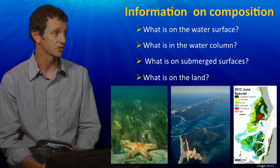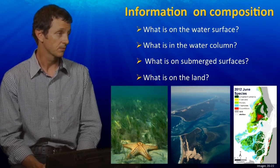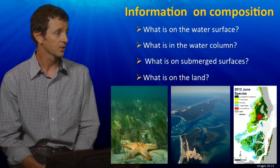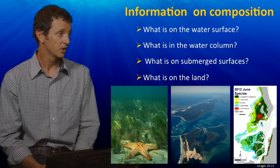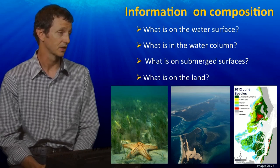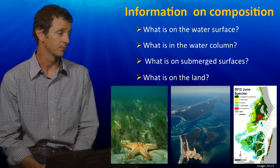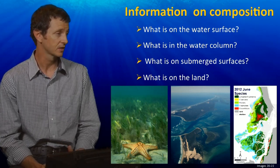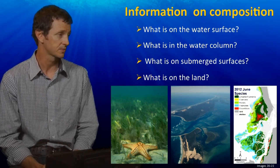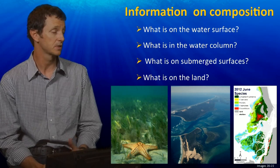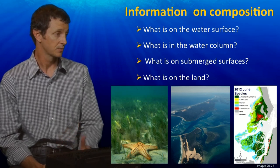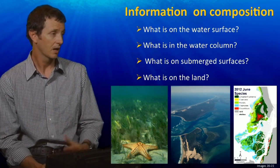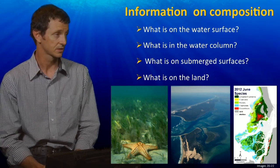Looking at composition in more detail: we can map what's on the water surface, what's in the water column, what's on submerged surfaces, and also what's on the land. That can be from quite fine levels of detail, such as seagrass species, the difference between seagrass areas and non-seagrass areas, or different types of seagrass.